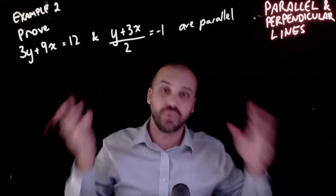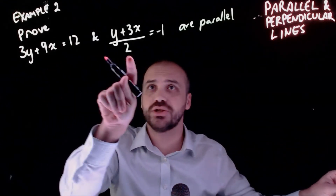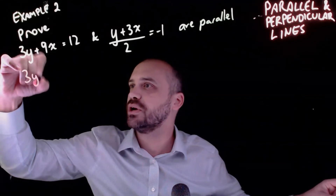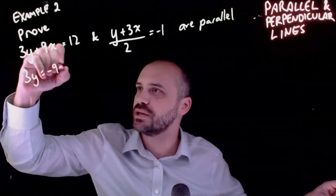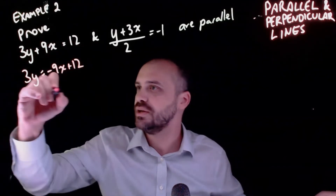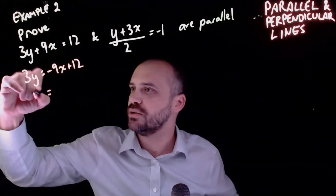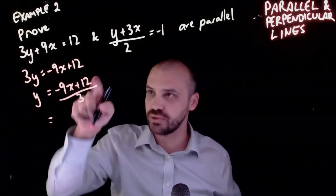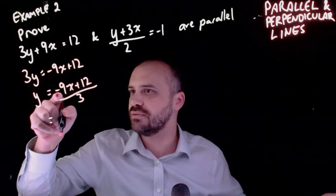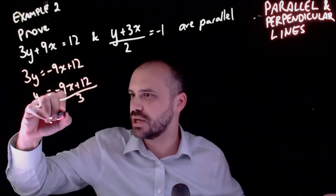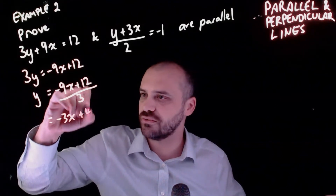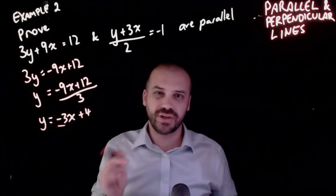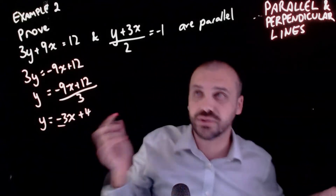This is essentially the same question, you just need to work harder to get to the answer. We have two equations and want to prove that they're parallel. Let's rearrange them both so that y is by itself. 3y equals negative 9x plus 12 - divide both sides by 3. y equals negative 9x plus 12 all over 3. Negative 9 divided by 3 is negative 3x, and 12 divided by 3 is 4. So y equals negative 3x plus 4, giving a gradient of negative 3.